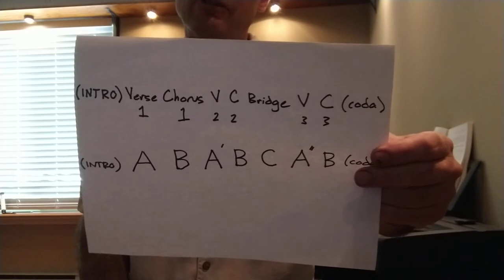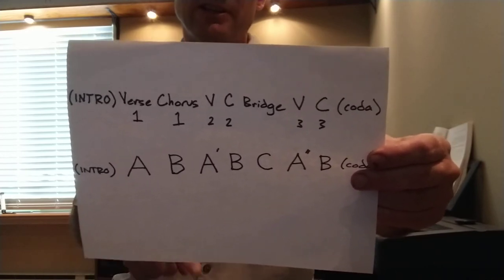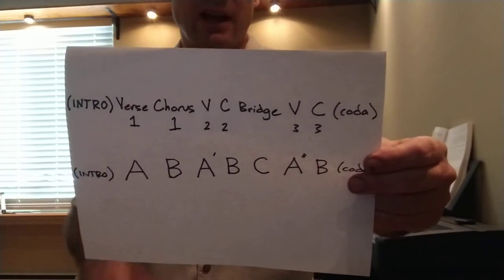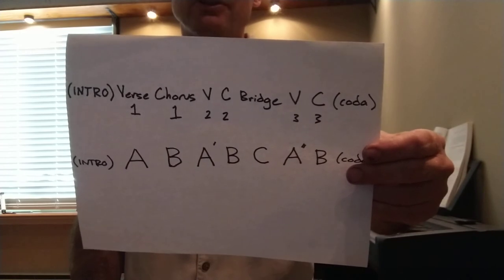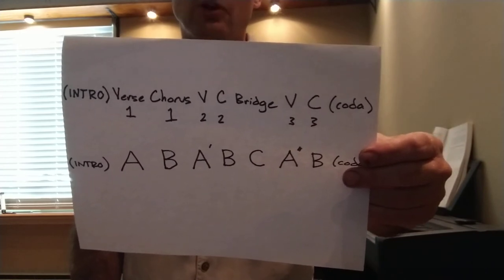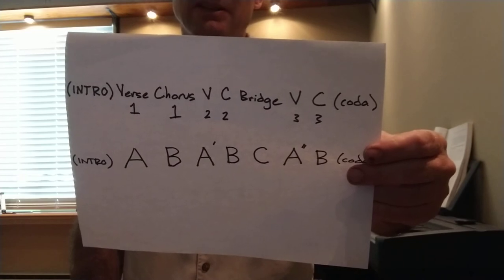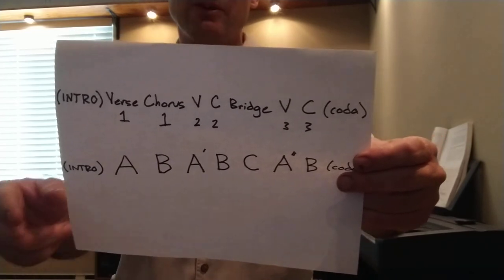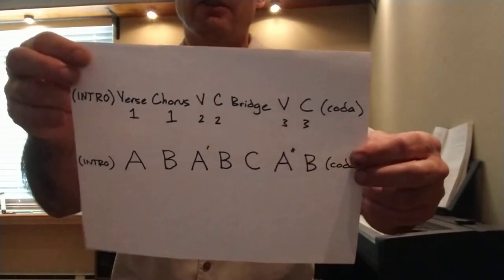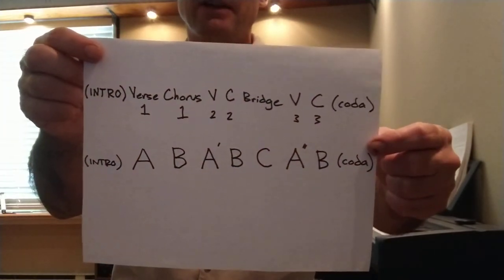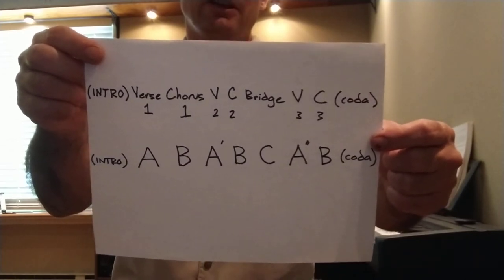Then we have a return of the verse — I'll call that A double prime — because it's again slightly different from both previous verses in that the words have changed. And then our final chorus, B. So we would say it's A, B, A prime, B, C, A double prime, B. Then again we might have that coda on the end, but since it's not structurally essential, I'm putting it in parentheses and not giving it a letter. This is how we diagram form in music.